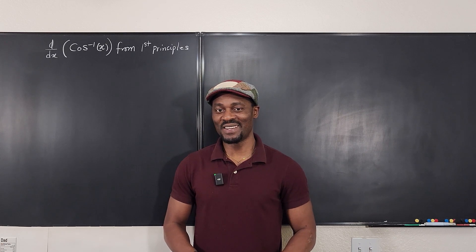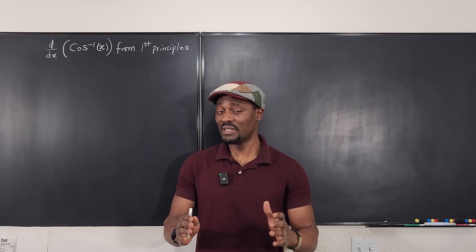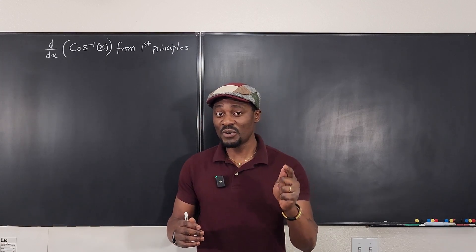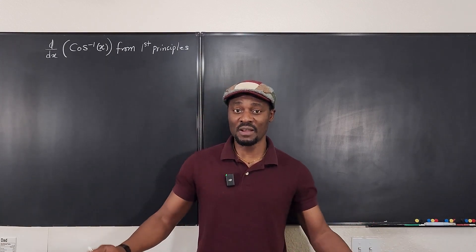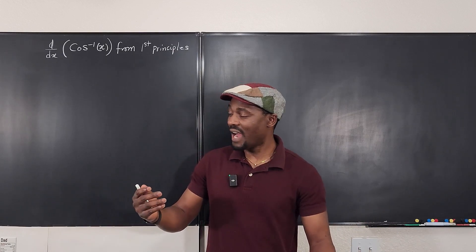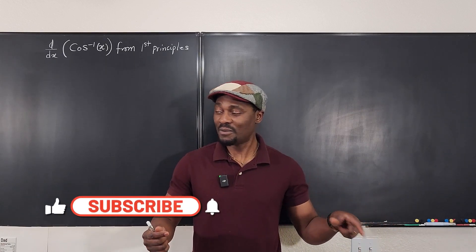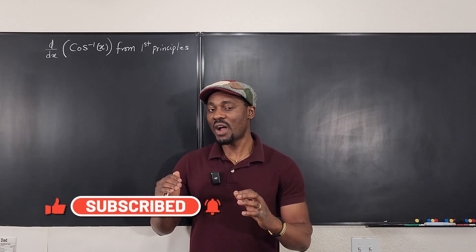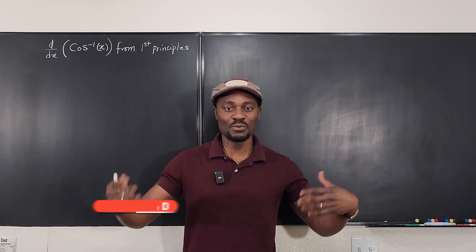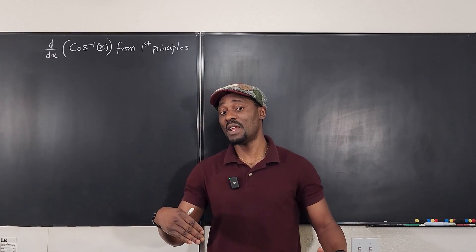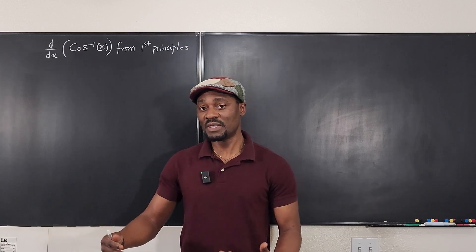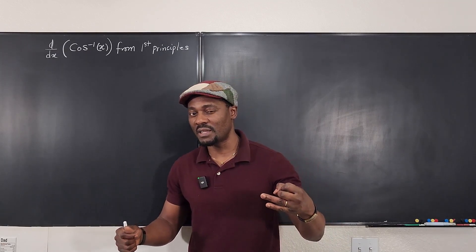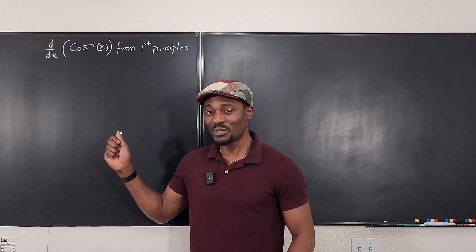Hello, welcome to another video. We're going to take the derivative of inverse cosine of x using first principles, or what you call the definition of the derivative. In the previous video I did about the inverse cosine of x, I showed you how to do that using just the rules of differentiation. But now we're going to go to the definition of the derivative of a function and do that. I've done that for arc sine and I think for arc tangent. So this is arc cosine.